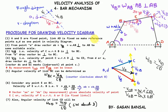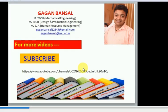Also, angular velocity of link CD will be vcd divided by CD, in the clockwise direction. If AB is clockwise, then BC will be anti-clockwise, and then CD will be clockwise — they alternate in positive and negative directions. You have to practice this for velocity analysis, and with suitable practice it will be clear in one or two attempts. Hope you are clear, thank you.